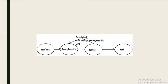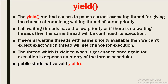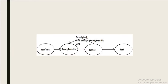The signature of the yield method is: public static native void yield. In the thread life cycle there are four states: new state, runnable state, running state, and dead state. Once a thread is in running state and we apply the yield method, it will come back into the runnable state.